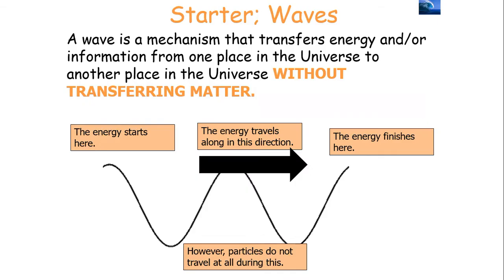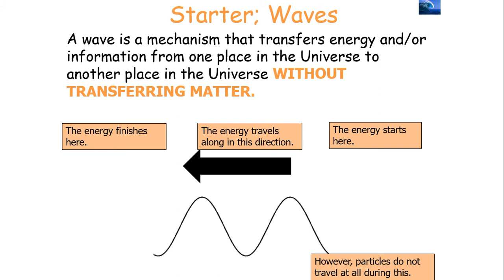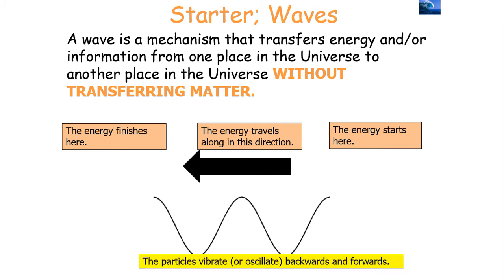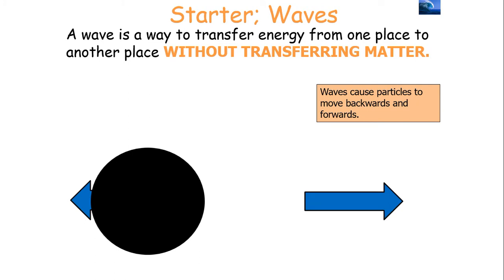So what do we know? Well, a wave is a mechanism that transfers energy or information from one place in the universe to another without transferring matter. Energy starts at one position, travels along the wave, and finishes at another point. The particles will oscillate during this process but will not travel from point A to point B. So the particles will vibrate or oscillate backwards and forwards, but there is no net movement of particles.